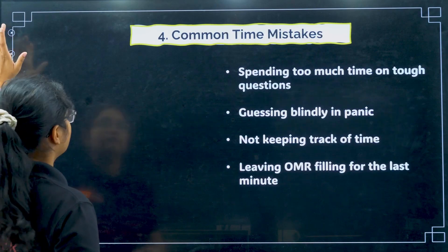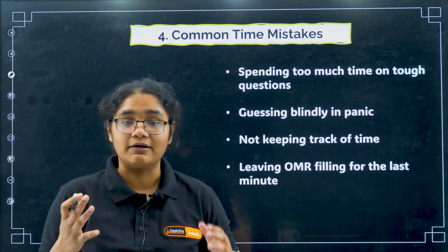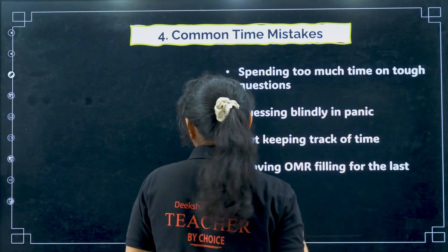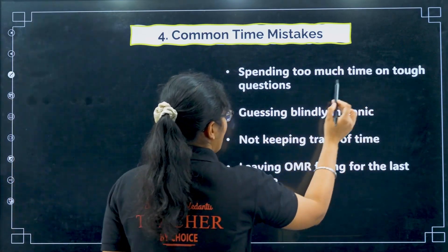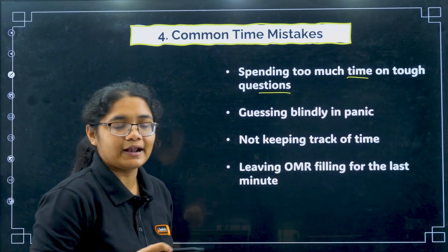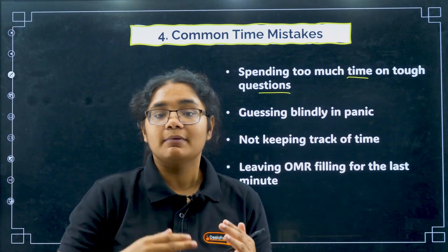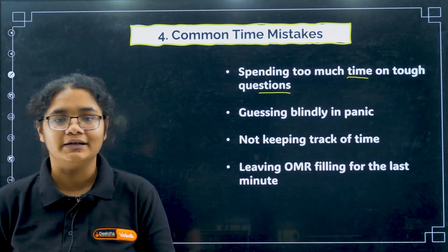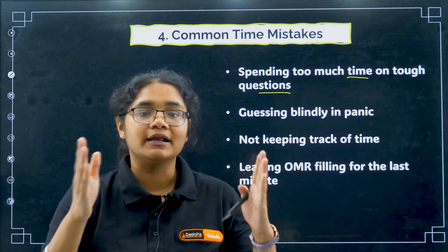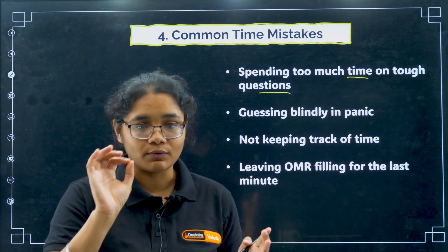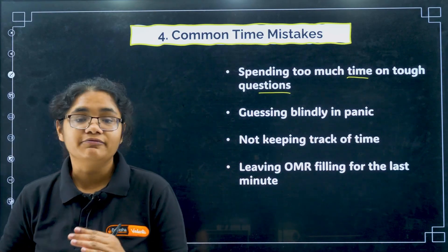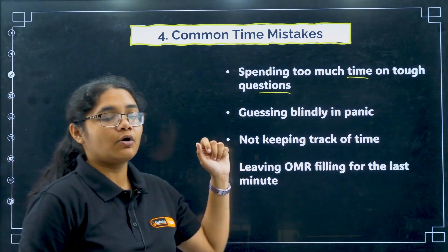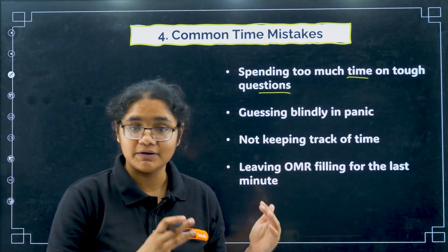The common time mistakes to avoid: first, spending too much time on tough questions. Even if you finally get the answer correctly, you would have lost time to solve many easier questions. One tough question takes 10 to 15 minutes and gives only one mark, whereas in that same time you could have solved 5 to 10 other questions and earned 5 more marks. Do not spend more time on tough questions from the beginning - keep them for the end.